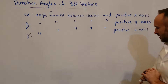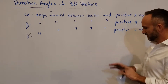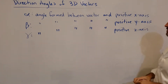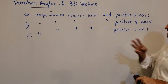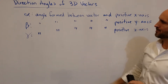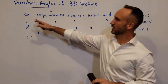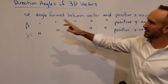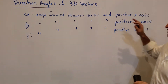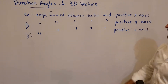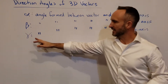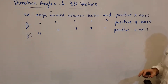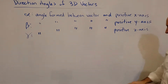So those are the definitions of the direction angles. There are three of them: alpha, beta, and gamma. Alpha relates back to the positive x-axis. Beta relates back to the positive y-axis. And gamma relates back to the positive z-axis.